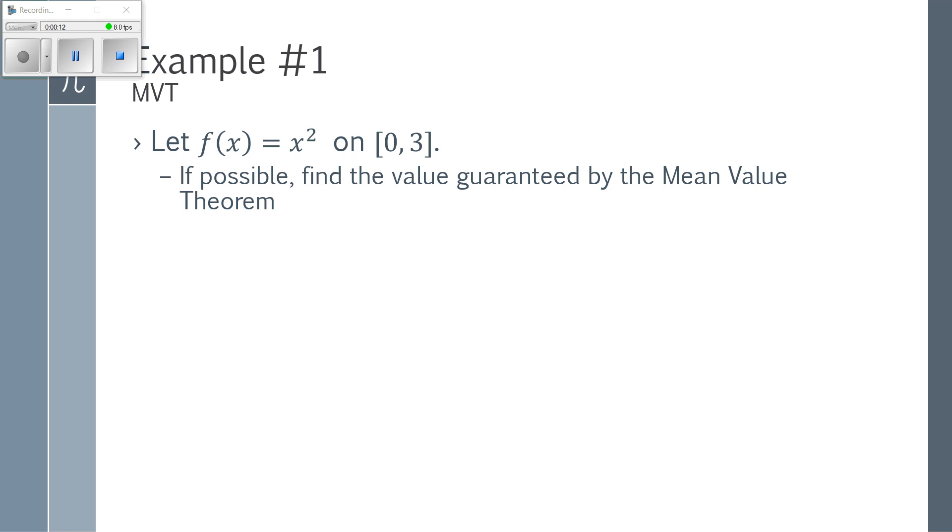So I have the function x squared on an interval 0 to 3. If possible, find the value guaranteed by the MVT. So first thing I have to do is I have to make sure I'm allowed to use the MVT.